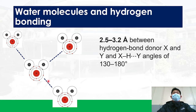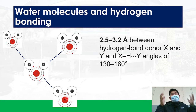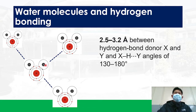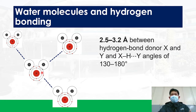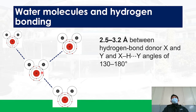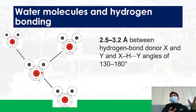The same attraction is happening in other water molecules. Hydrogen bonds occur at distances of 2.5 to 3.2 angstroms between the participating molecules, and the angle between them is around 130 to 180 degrees. Within those conditions, hydrogen bonds occur as long as there are partially negative and partially positive molecules — in this case, water molecules.